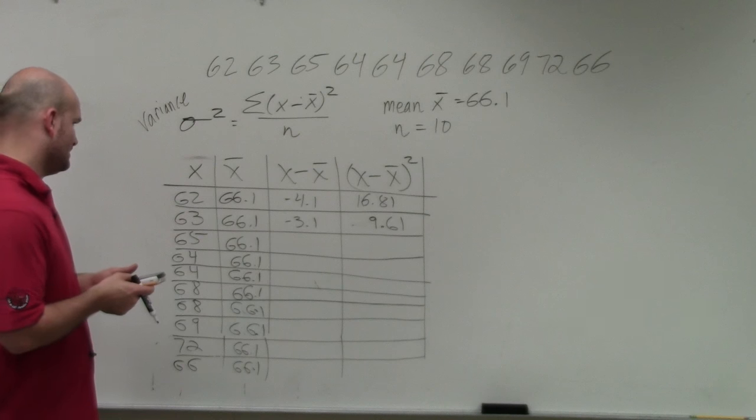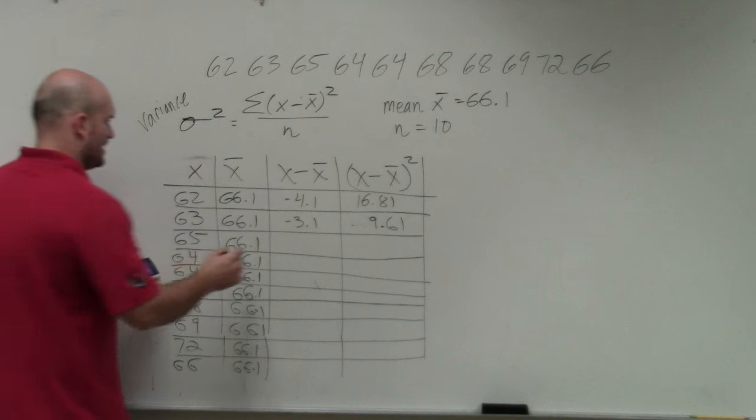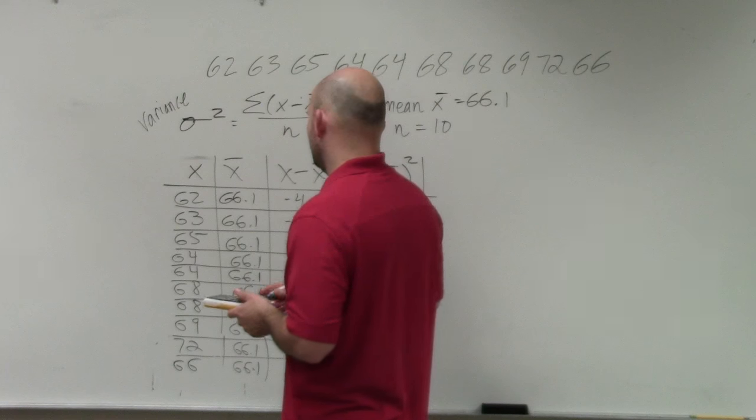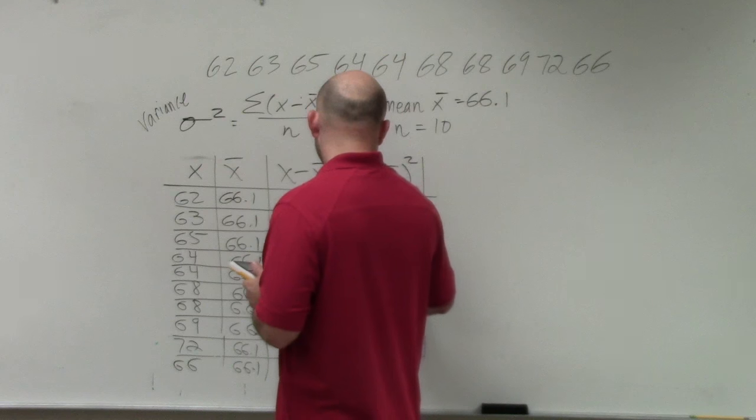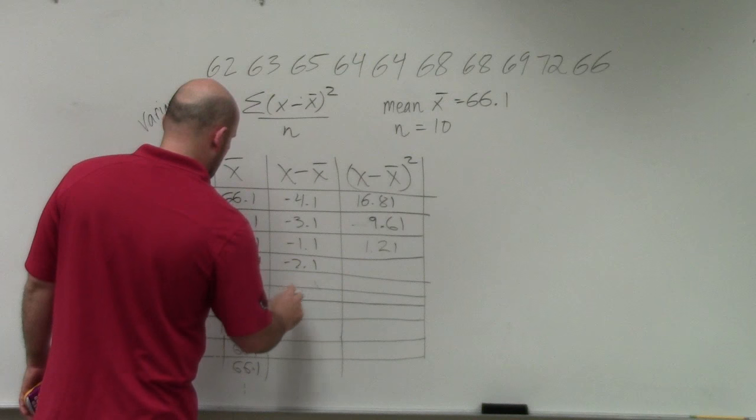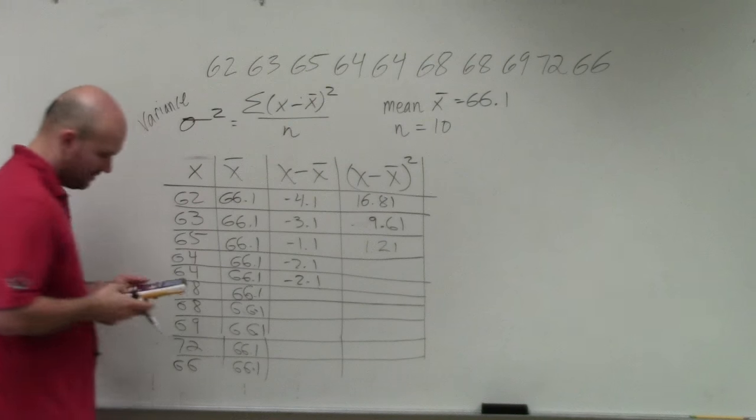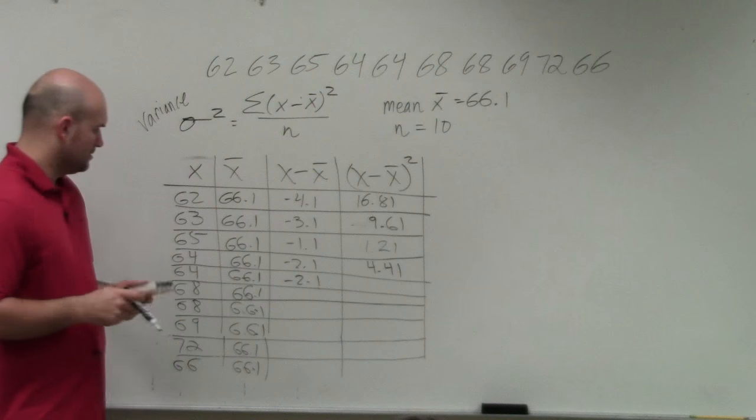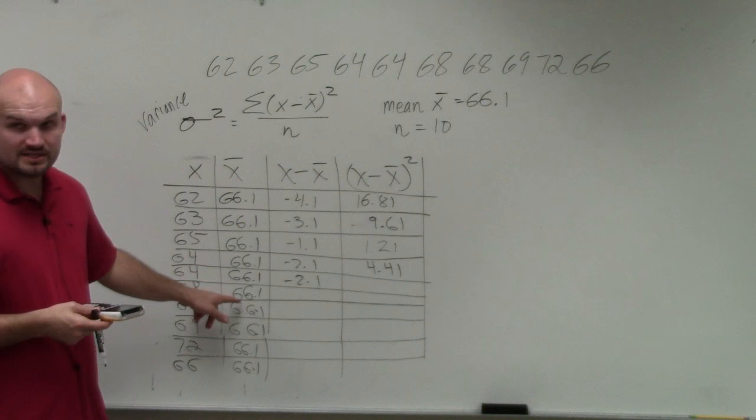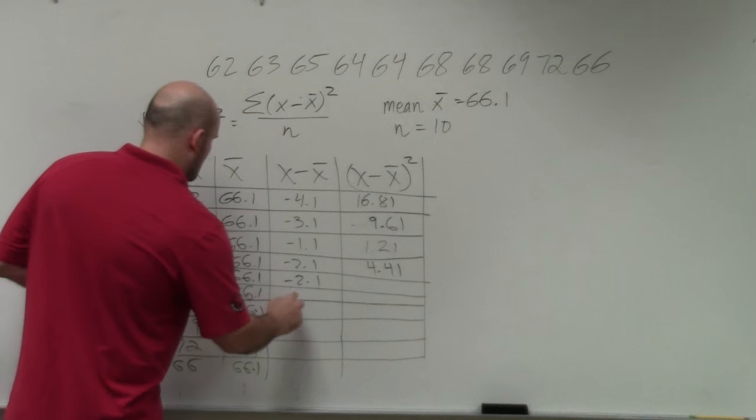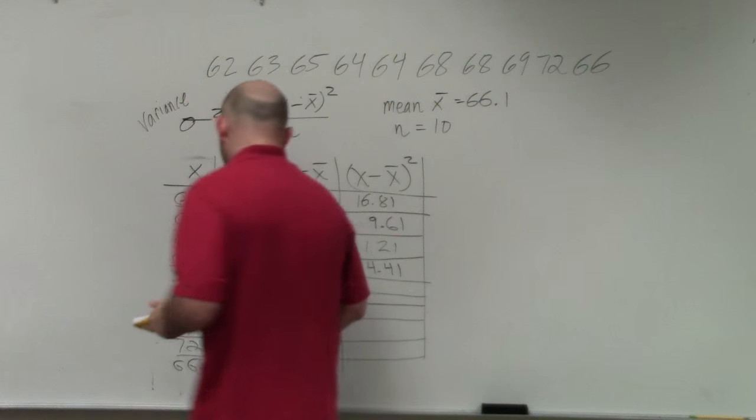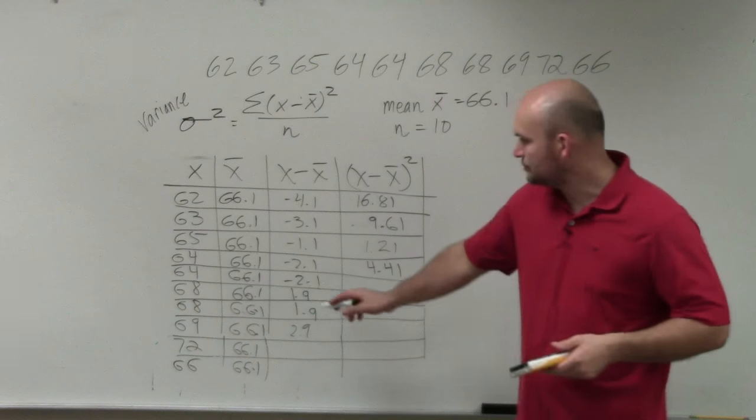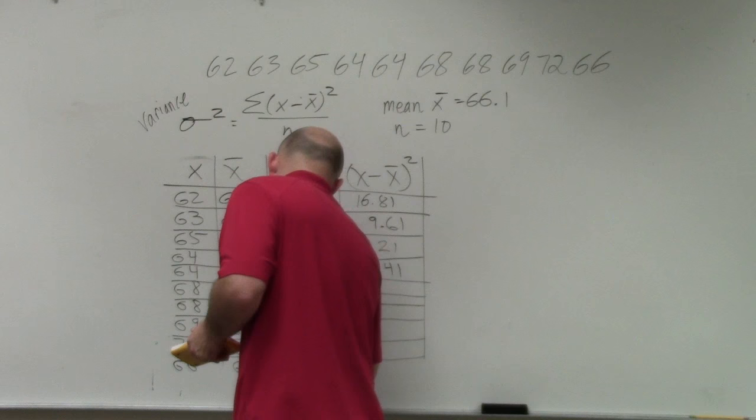9.61. Then I do 3 and then 5. So that's going to be negative 1.1. And then negative 2.1 for the next one. So 1.21. This is negative 2.1. Negative 2.1. And that's squared? 4.41. What is this? 1.9? And that one, this one's going to be 2.9. And that one's going to be 5.9. This is going to be negative 0.1.